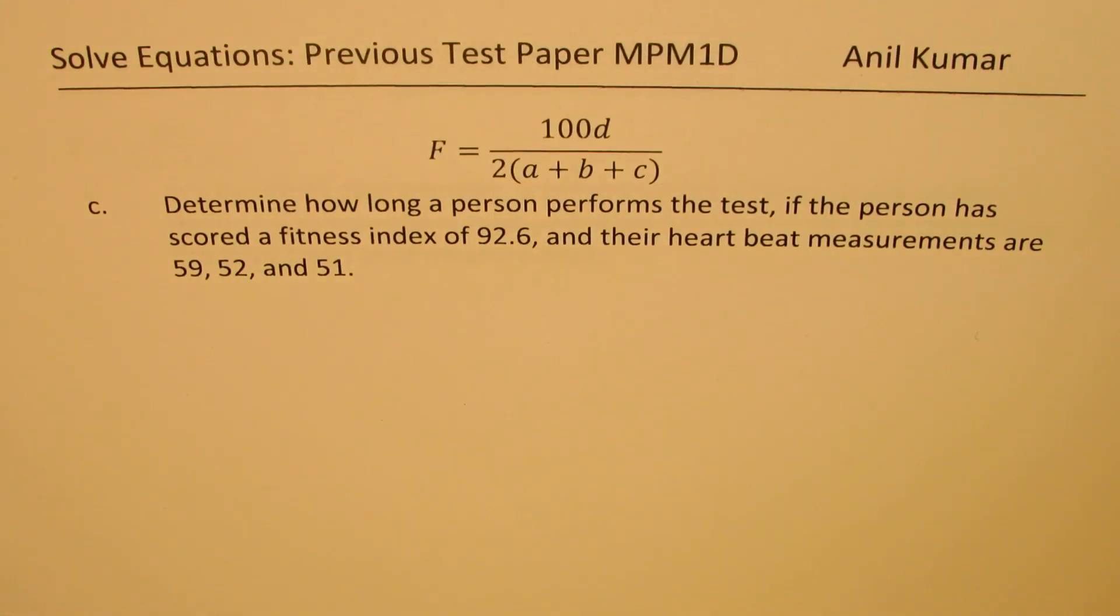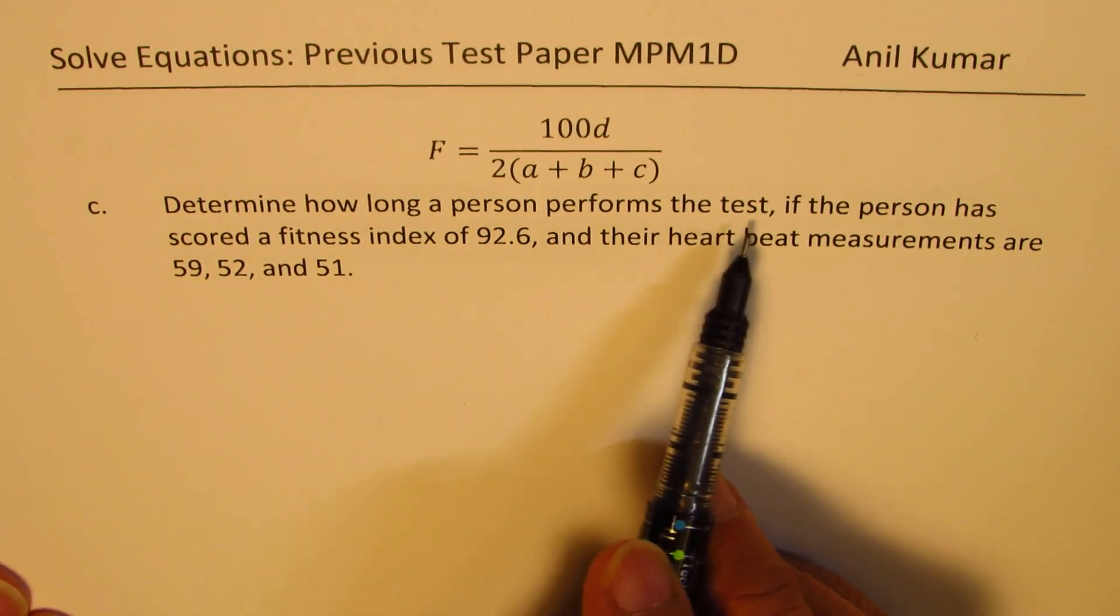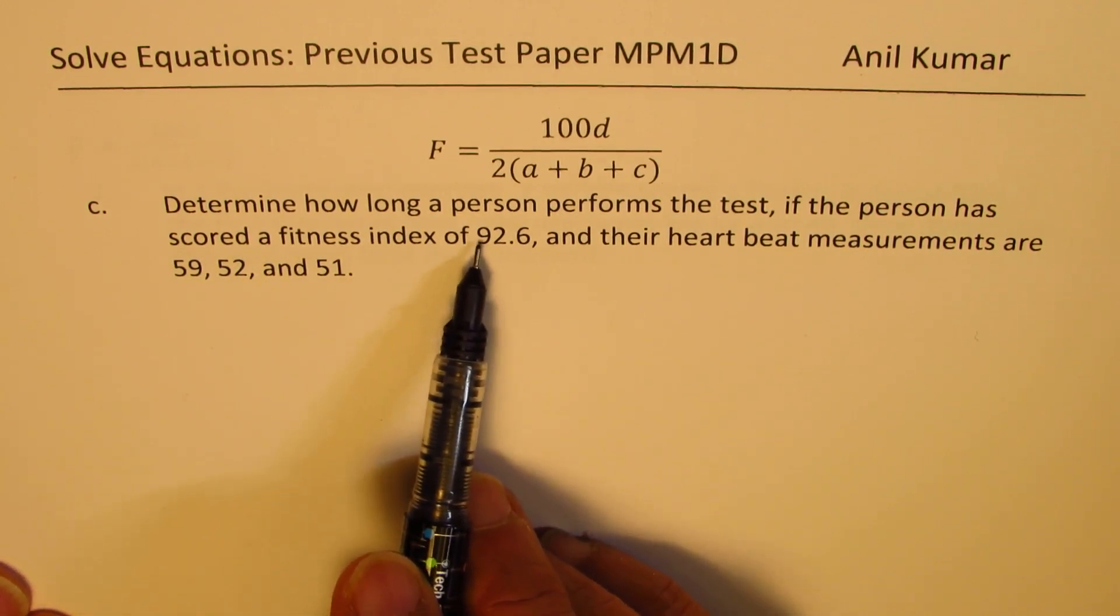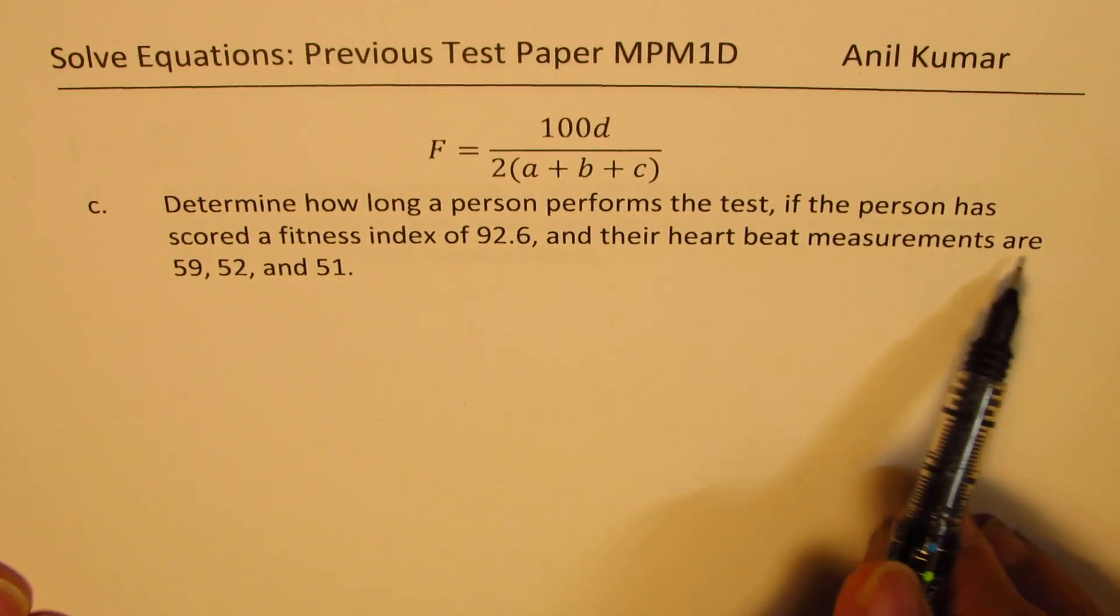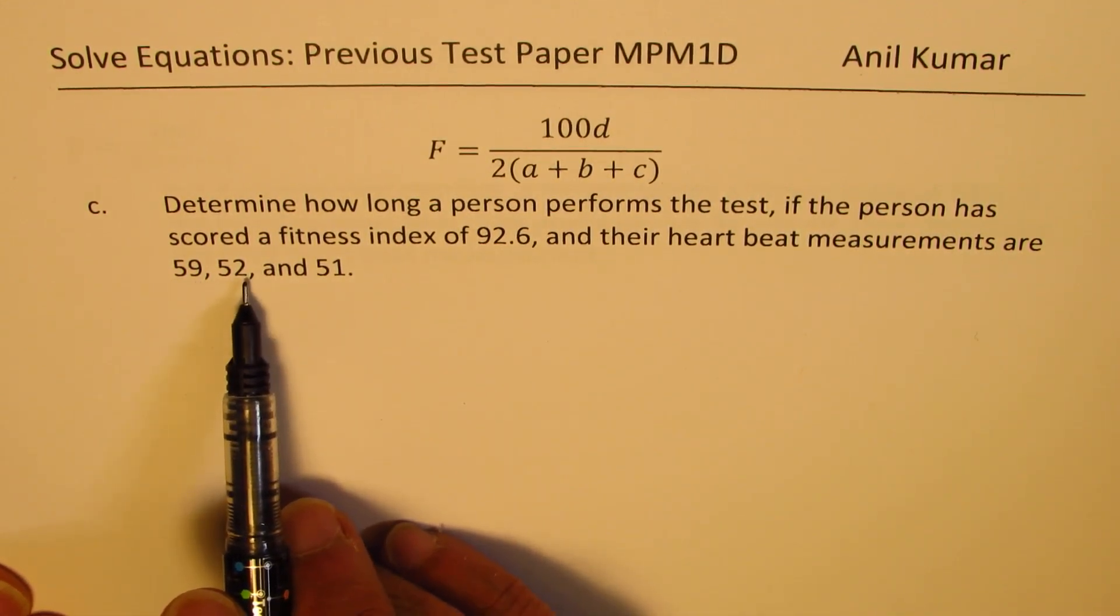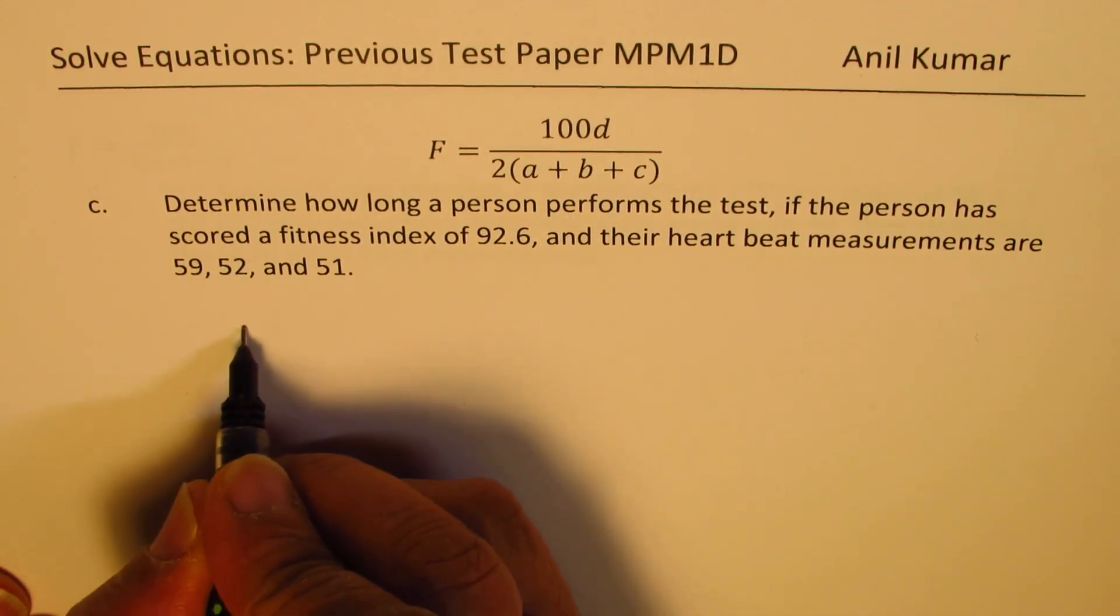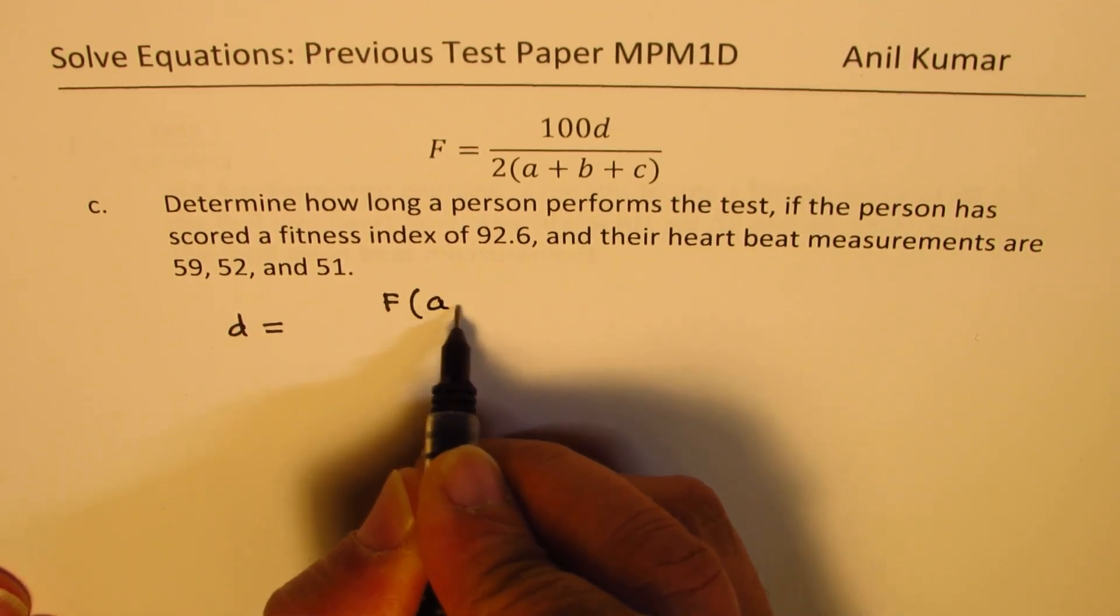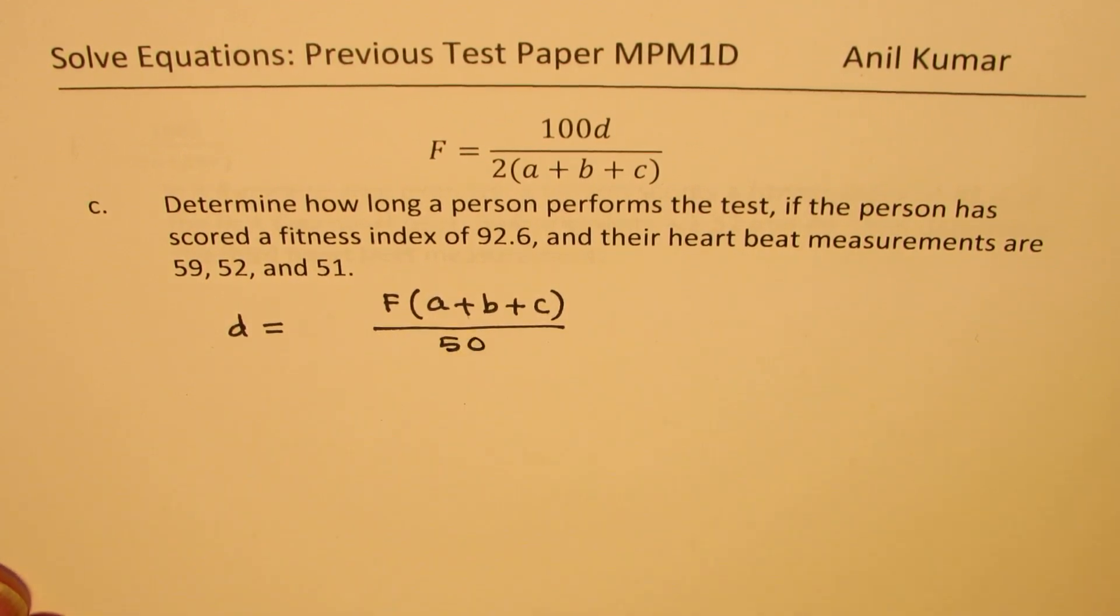Let's see part C. In part C, we have to determine how long a person performs the test if the person has scored a fitness index of 92.6 and their heartbeat measurements are 59, 52 and 51. Well, you could use the formula which we just derived, which is D equals F times (A plus B plus C) divided by 50 to get the answer.